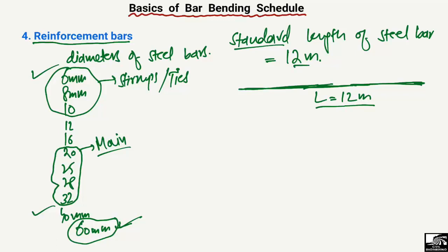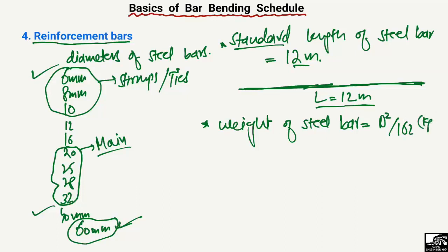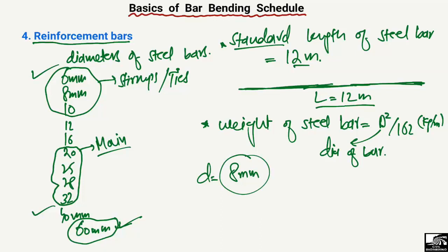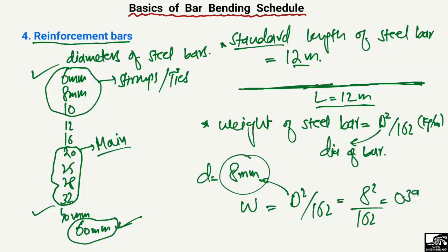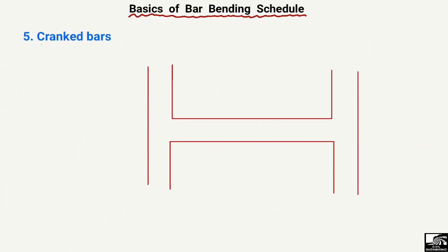The standard length of a steel bar is 12 meters. The weight of a steel bar can be found using the formula: d squared divided by 162, which gives the weight in kilograms per meter, where d is the diameter of the bar. For example, for an 8 millimeter diameter bar: 8 squared divided by 162 equals approximately 0.39 kilograms per meter. This is how to find out the weight of a steel bar.